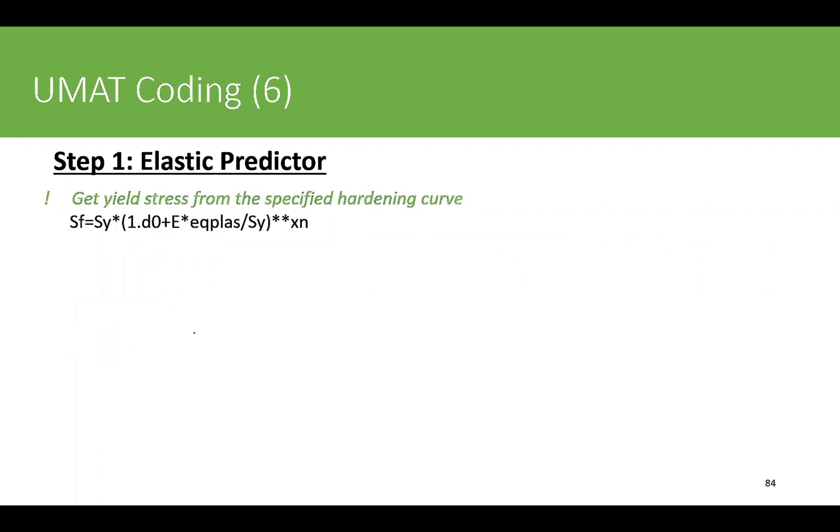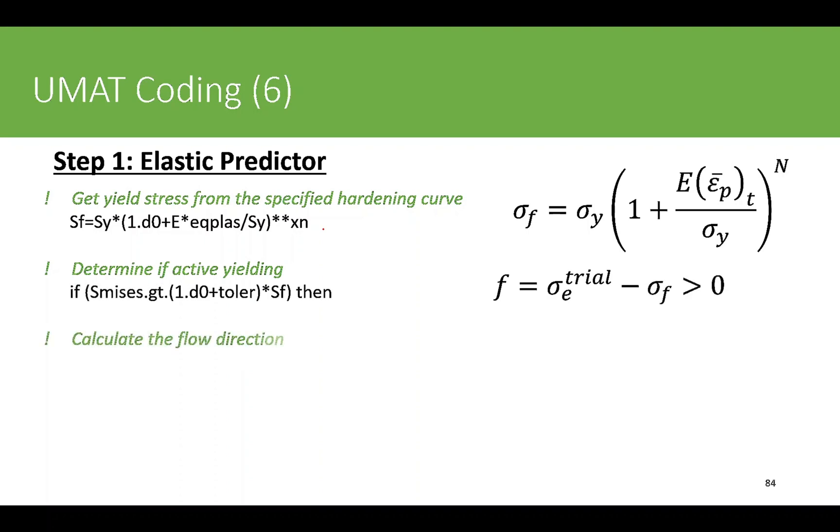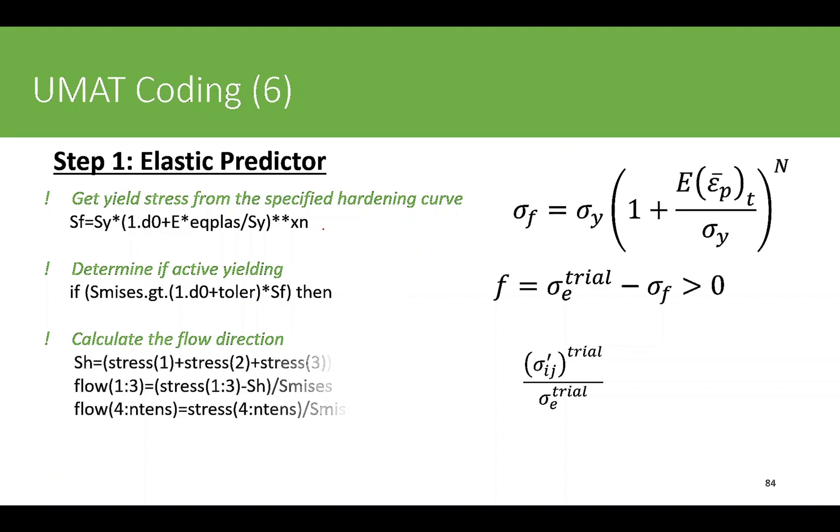Once we have done that, we compute the yield stress value based on the current equivalent plastic strain value. We use the relationship which was sigma_y times (1 + E*epsilon_p/sigma_y)^N, which was this formula here. Then we determine if active yielding is occurring, which is based on this function. If it's yielding, then we compute the flow direction using the deviatoric part of the trial stress divided by the equivalent stress value. Everything is the same from the previous part; only thing which has changed is the sigma_f value.